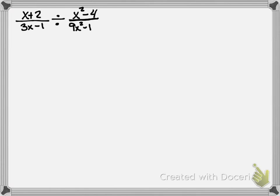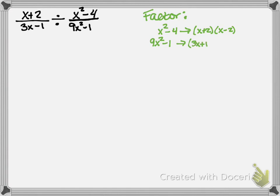For the last one, I want to remind us how to factor difference of squares. For x²−4, we take the square root of both terms: square root of x² is x, square root of 4 is 2, giving us (x+2)(x−2). For 9x²−1, the square root of 9 is 3, so we get 3x; the square root of 1 is 1. So it factors to (3x+1)(3x−1).